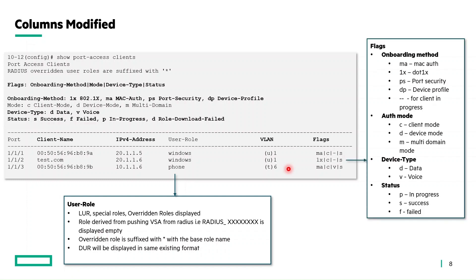The next column modified is the flags column, with a new addition to the flags themselves. The first flag is the onboarding method — how the client onboarded: via MAC auth, 802.1X, port security, device profile, or in-progress state. Next is the auth mode: client mode, device mode, or multi-domain mode. Next is the device type flag: whether it is a data device or a voice device. Finally, the status flag indicates the client onboarding status — success, failed, or in-progress.